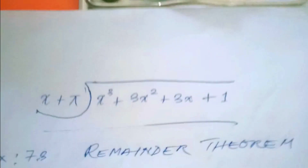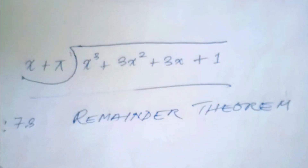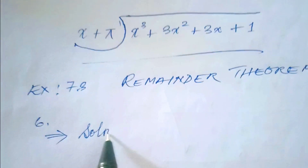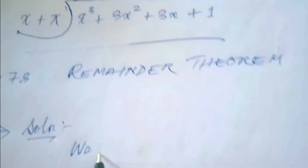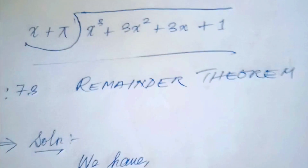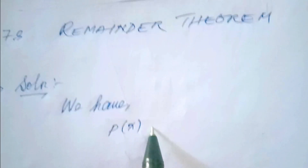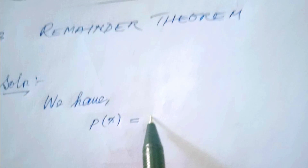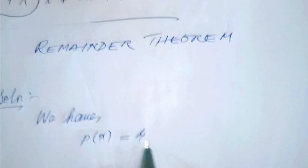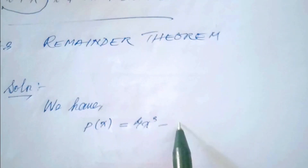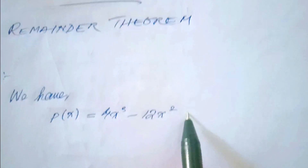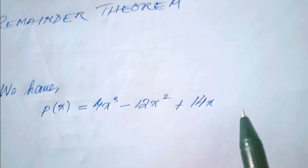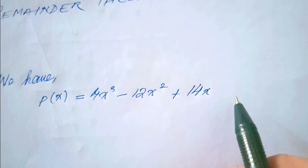Solution. Question number 6, solution. We have P of x is equal to 4x cubed minus 12x squared plus 14x minus 3.